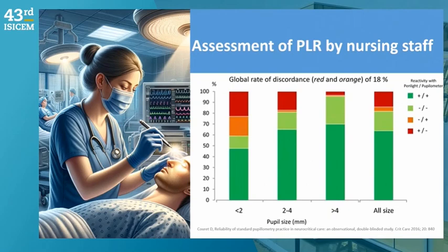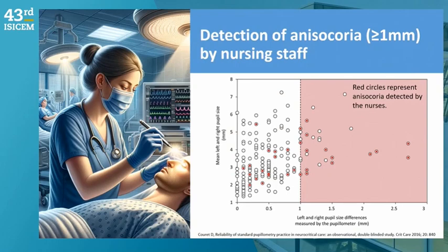When we look at the precision of the exam and see a different pupil size — below two or above two millimeters — generally speaking, one time in every five we make an error in evaluation of size and activity of the pupils. This error is higher when the pupil is very small. We also search for anisocoria as a warning sign of third cranial nerve compression, but with manual assessment we can make errors.